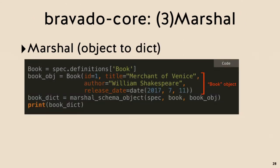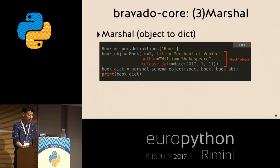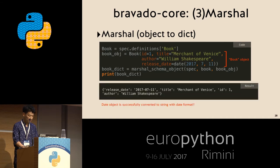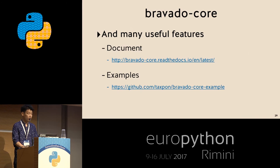The final feature of bravado-core is marshalling — the inverse of unmarshalling, converting a Python model object back to a dict. For example, a Book object with release_date as a date object 2017-07-11 will have its release_date automatically converted to a string in date format. There are many other good features in the documentation, and example code is available at the provided URL.